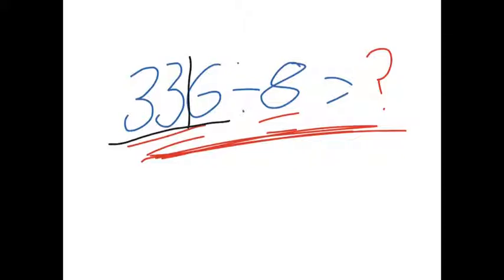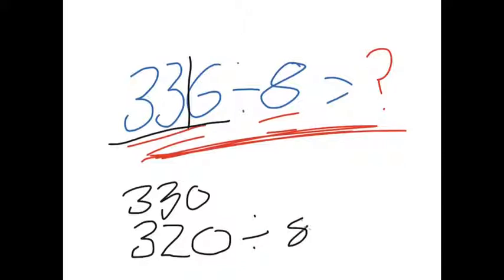So you get 336 and you take the first two numbers off, so 33. But you go down and you find an even multiple of 8, so that would be 32, which is close to 33. Then you just add that zero there to get 320.